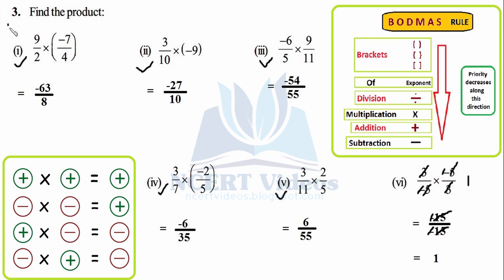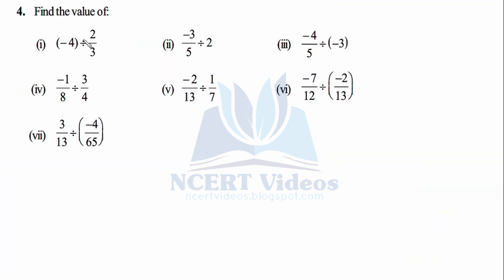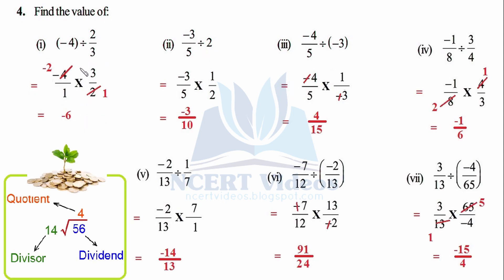Question 4: Find the value — that is, divide the rational numbers. Before solving, let's recall the division process. The number being divided is called the dividend (also a term for profit received from stock market investments). The divisor is the number in the denominator. For fractions, if nothing is written in the denominator, it is understood as divided by 1.